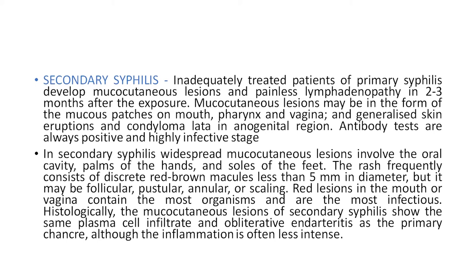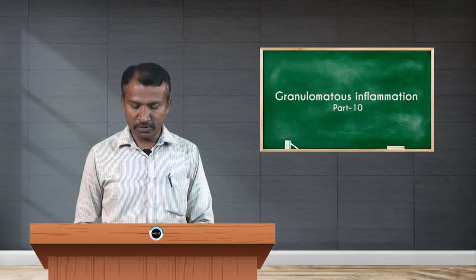The rash frequently consists of discrete red-brown macules less than five millimeters in diameter, but it may be follicular, pustular, annular, or scaly. Red lesions in the mouth or vagina contain the most organisms and are the most infectious. Histologically, the mucocutaneous lesions of secondary syphilis show the same plasma cell infiltrate and obliterative endarteritis as the primary chancre, although the inflammation is often less intense.